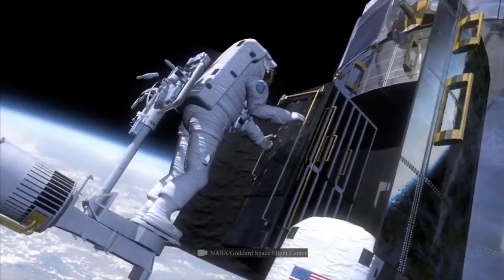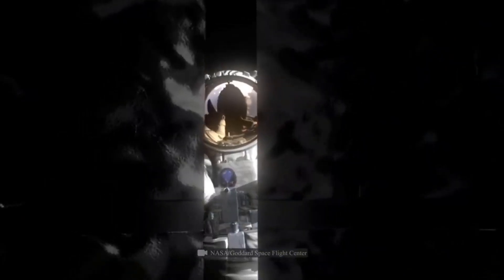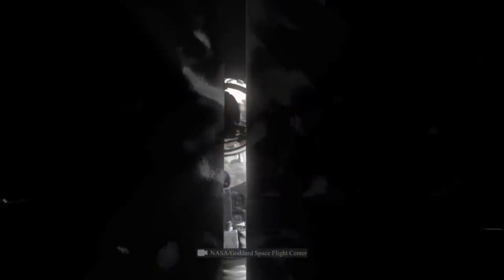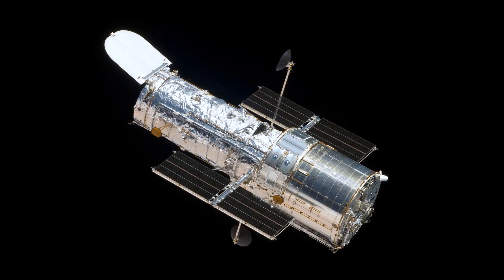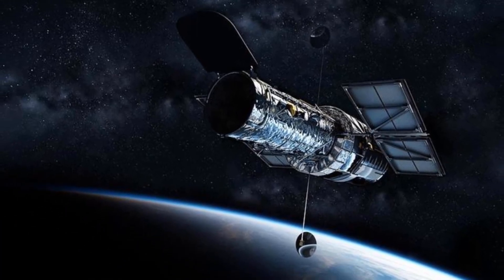Hubble finally launched aboard the space shuttle Discovery on April 24, 1990, and a day later was deployed into low Earth orbit about 340 miles. Getting Hubble developed and launched cost $1.5 billion, but there would be ongoing costs as well, both expected and unexpected.